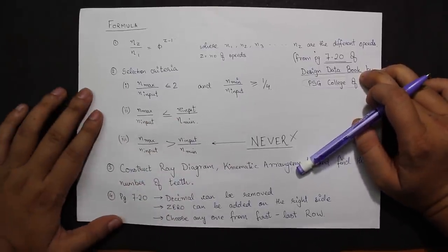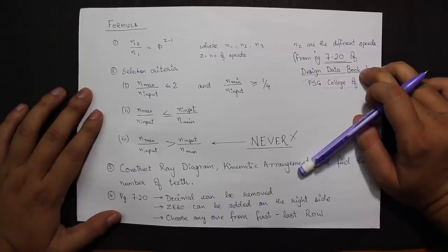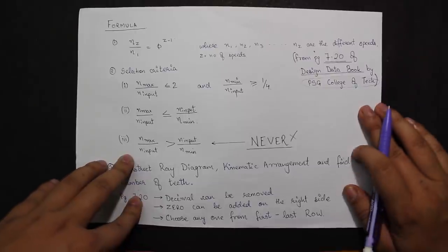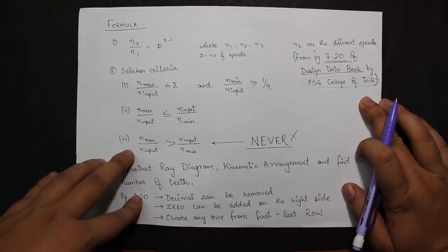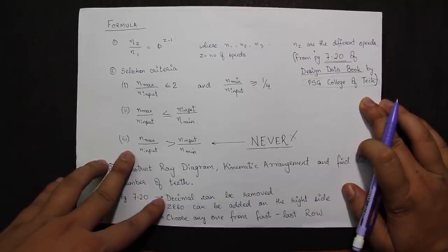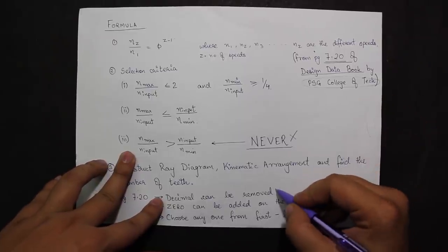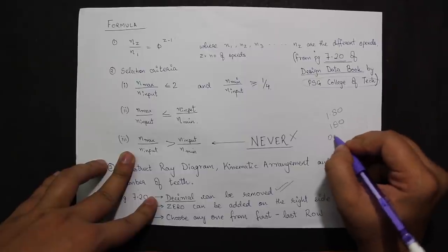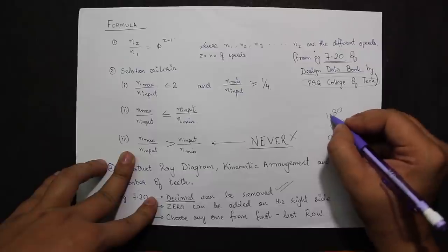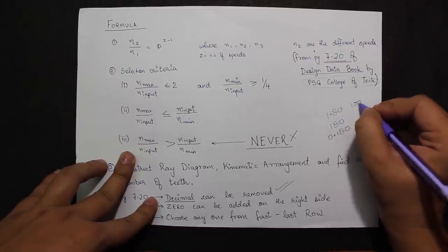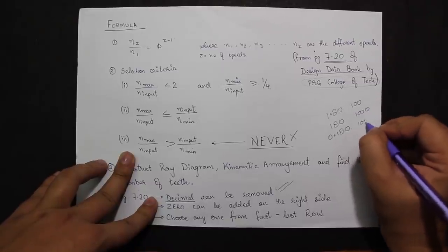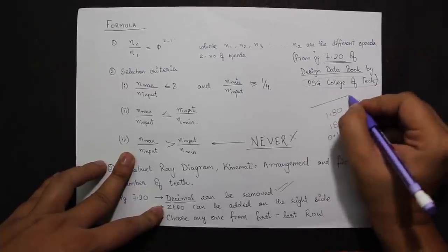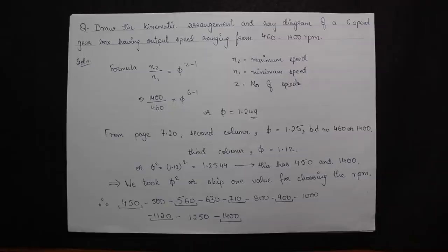When solving questions, three things will be asked: ray diagram, kinematic arrangement, and number of teeth — all of which will be covered in subsequent videos. On page 7.20 there is a tabular column with four columns and many rows. Keep in mind: the decimal can be removed from any number (e.g., 1.80 becomes 180); zeros can be added on the right side (100 becomes 1000 or 10,000); and the first row and last row are exactly the same, so choose only one of them.